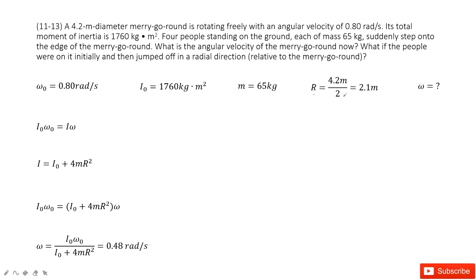We can get from diameter. And also the moment of inertia is given. We know there are four persons, each person's mass is given, and they suddenly step onto the edge of the merry-go-round. Find the final angular velocity.